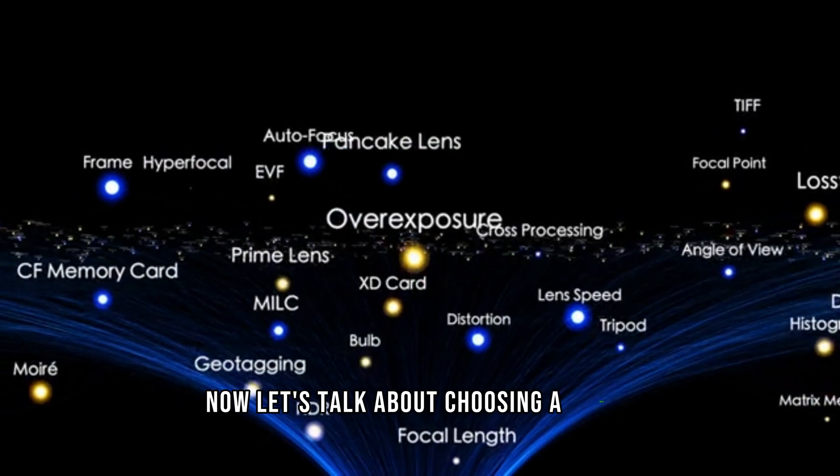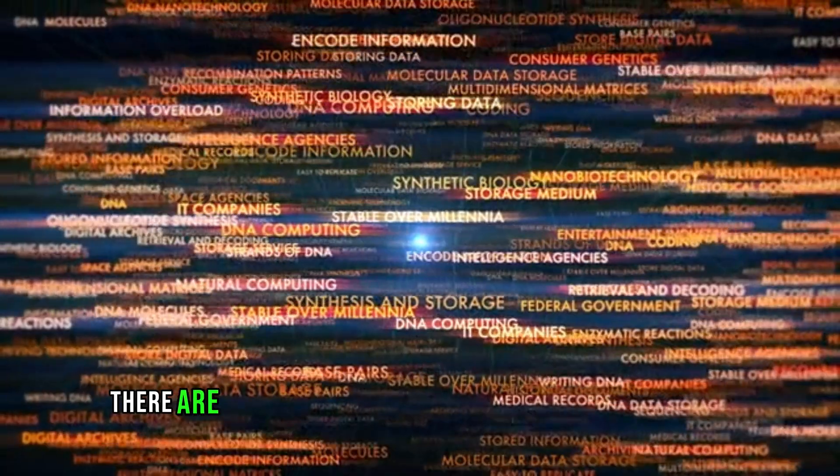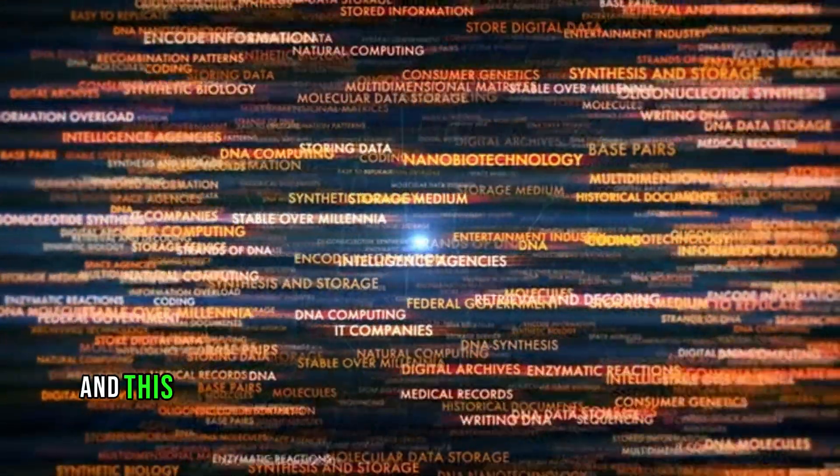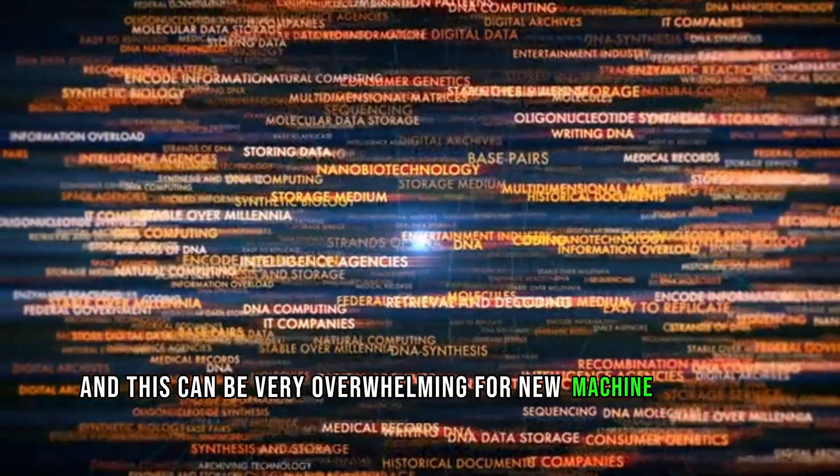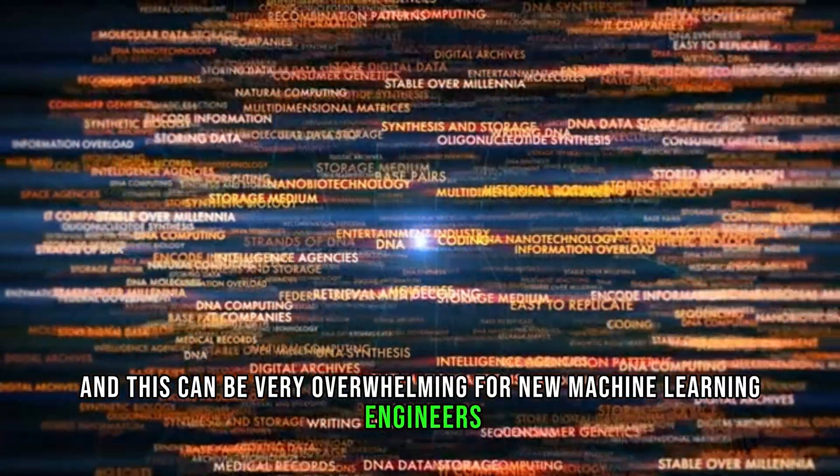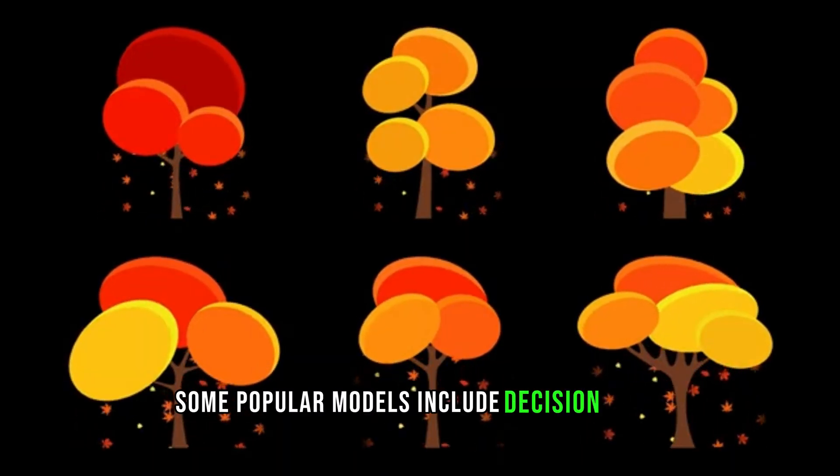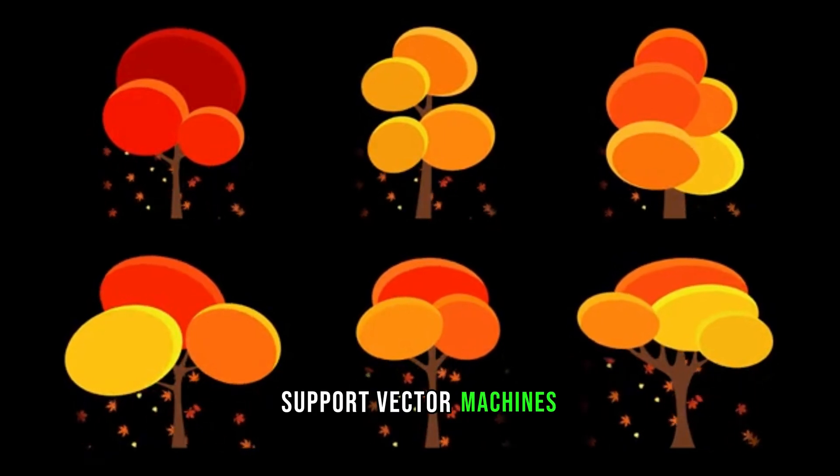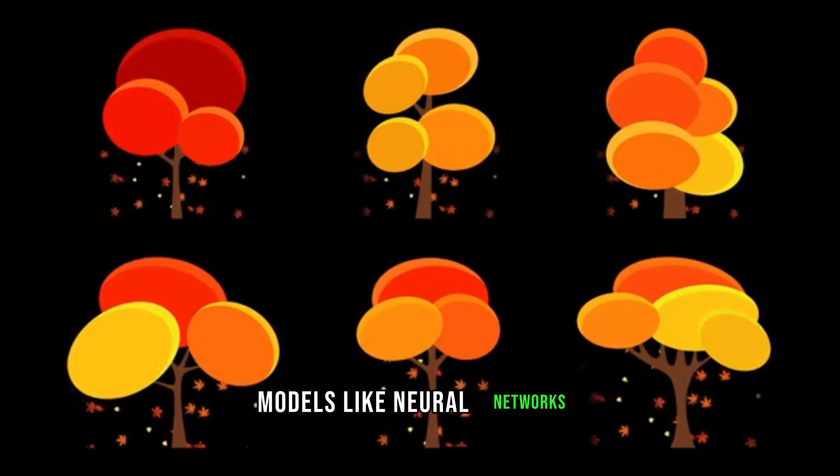Now let's talk about choosing a model. There are literally hundreds of models to choose from, and this can be very overwhelming for new machine learning engineers. Some popular models include decision trees, support vector machines, and of course, deep learning models like neural networks.